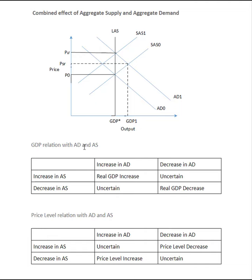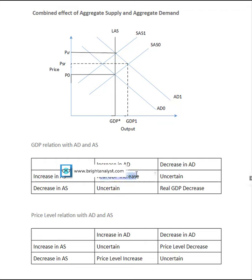When we talk about the combined effect of aggregate demand and aggregate supply: when both increase, AD0 moves to AD1 and AS0 moves to AS1. In this case we see an increase in GDP. And if they both decrease, we will see a decrease in GDP.